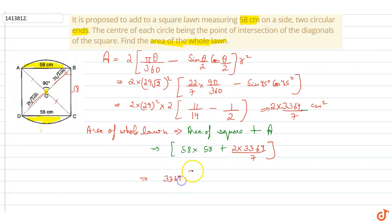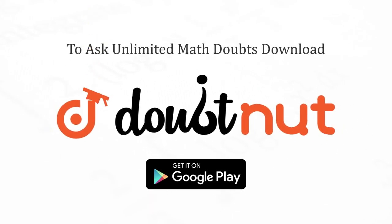Finally, we have 1 plus 2/7, finally we have 4325.14 cm square. So we have area of hole in this area, we have area of hole in this area.